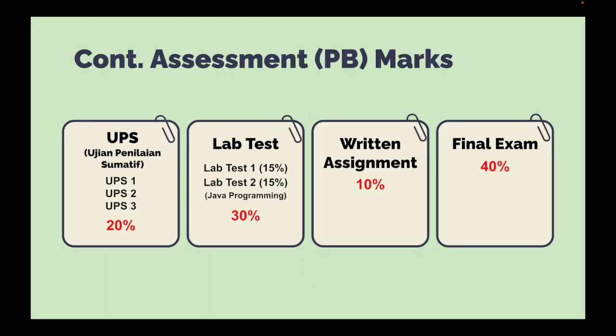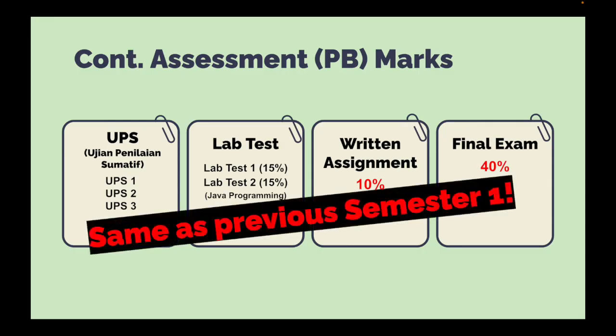As usual, this assessment, or call it PB, Markah PB, is divided into two, which is final exam 40%. And then your continuous assessment will be 60%. UPS will be 20% and you will have three. You will be sitting for three times UPS. UPS 1, UPS 2, UPS 3. And then lab tests, as usual. Lab test 1 and lab test 2. But all these lab tests will be about Java programming. And then last but not least, it's written assignment, 10%. What are you going to write about this assignment? It's mainly about related to Java itself. And this is all same as previous semester 1.